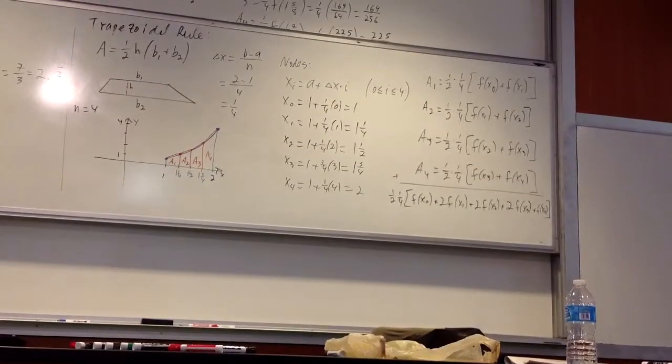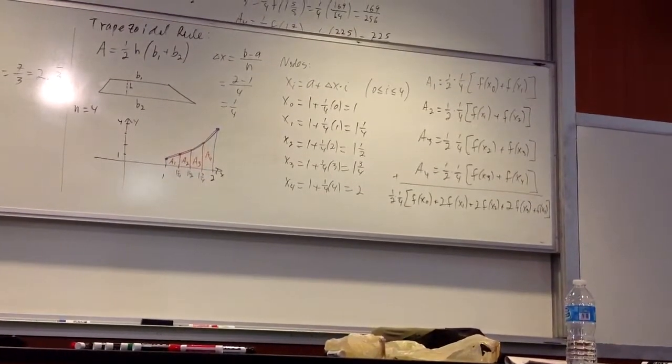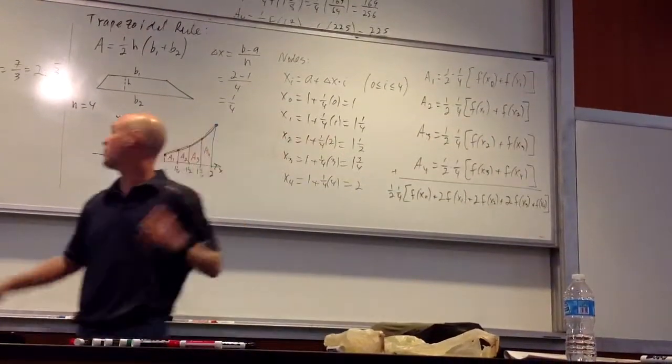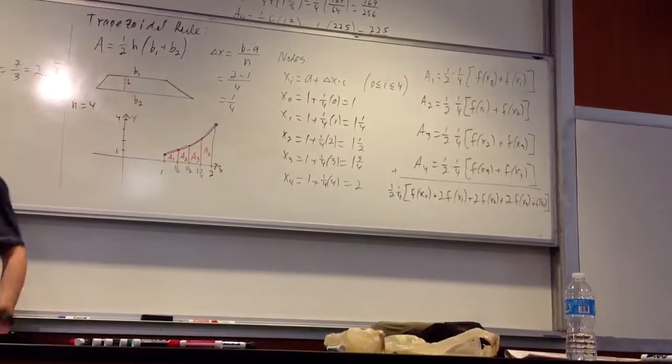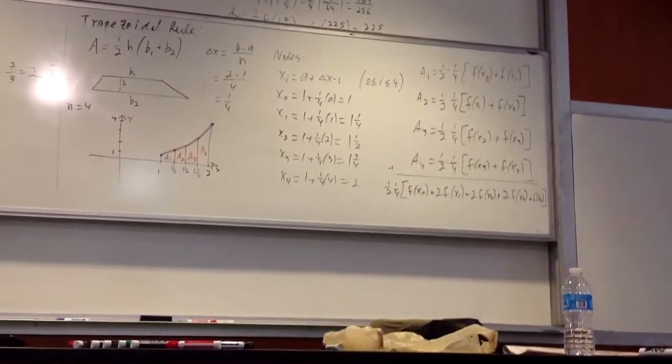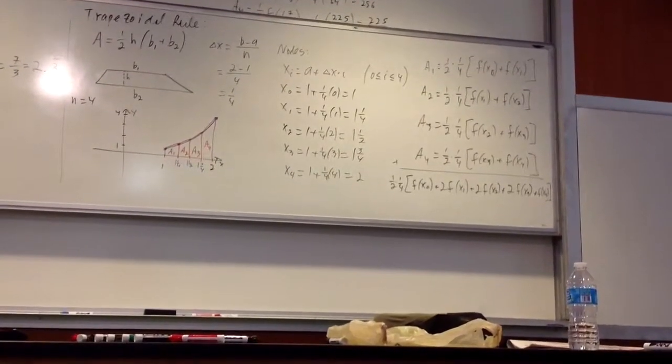And there's a formula here. See if you can verbalize to someone what the formula is going to be. The one half is part of the formula. What is the one fourth? Delta x. That's your delta x. So see if you can come up with a generalized formula here. Just talk it over for a minute. What do you think it is?